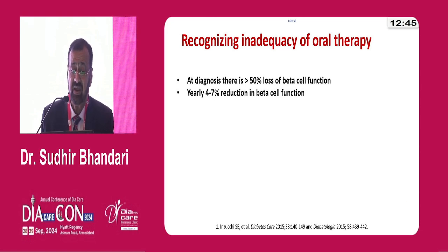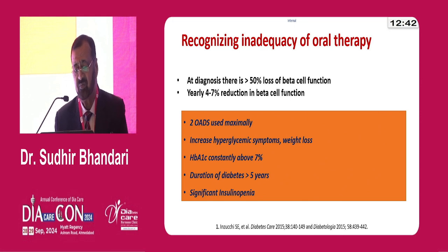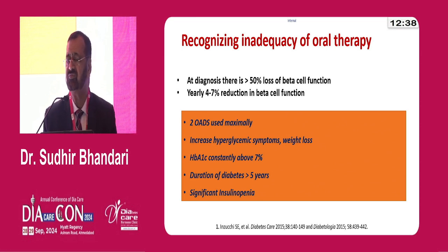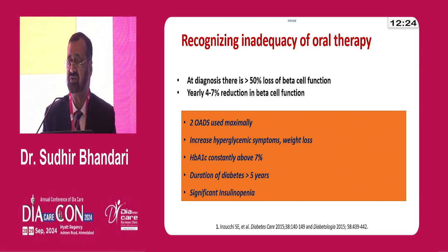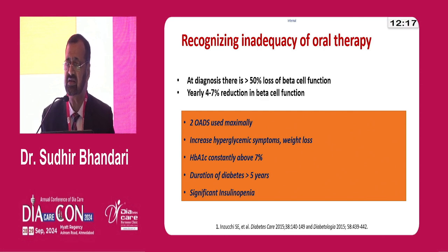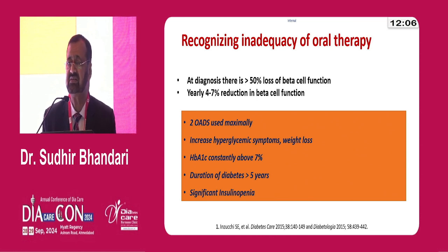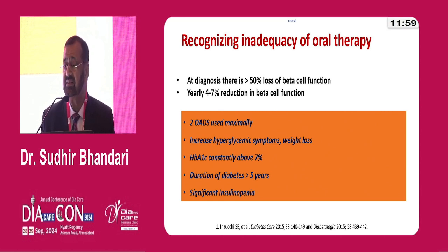Recognizing inadequacy of oral therapy: at diagnosis, 50% of beta cells are already gone. Yearly, we lose 4–7% of beta cell mass. This beta cell apoptosis makes a patient, in a span of 8–15 years, totally insulin-deficient. Unfortunately in India, introduction of insulin is much later, when the patient is already insulin-deficient. One of the most important criteria to analyze the insulin-deficient stage is a patient having uncontrolled diabetes on three medications, losing weight, and persistent hyperglycemia. Weight loss is one of the most important signs of insulin deficiency, so we need to be mentally prepared to introduce and optimize basal insulin in time.